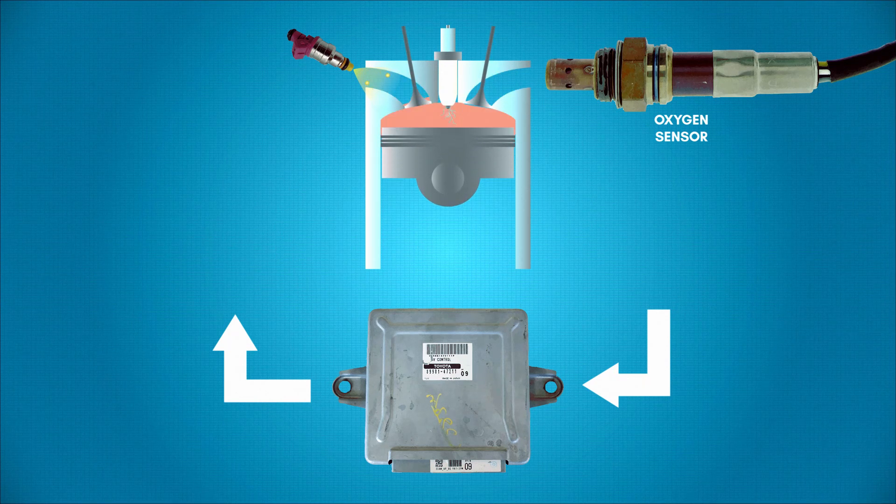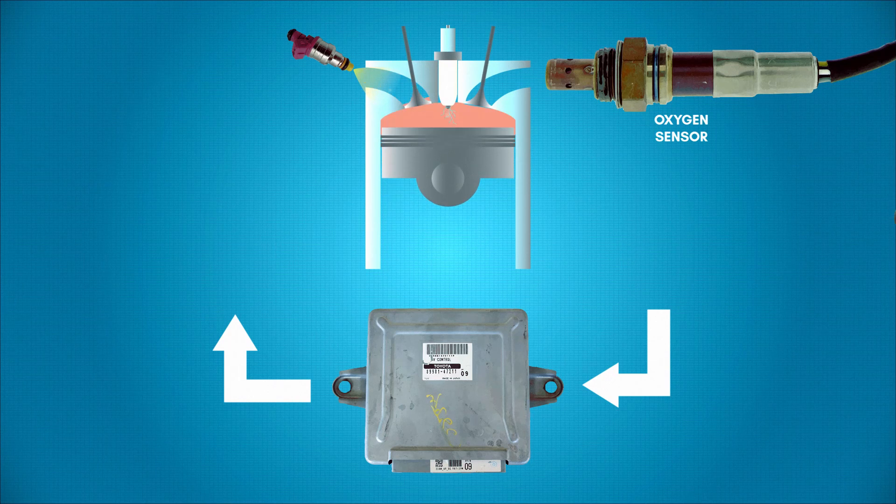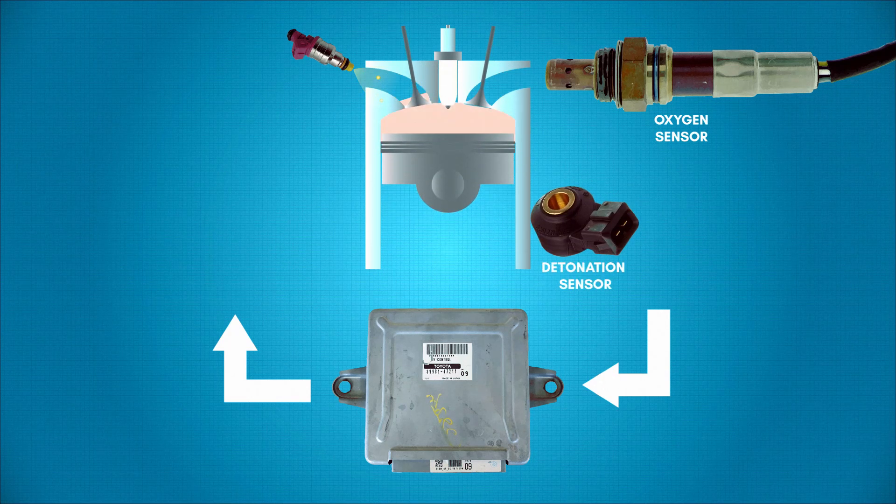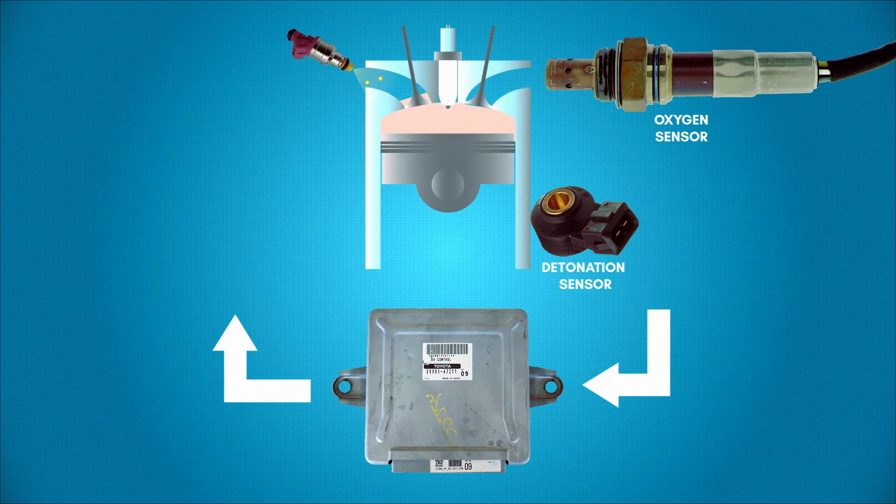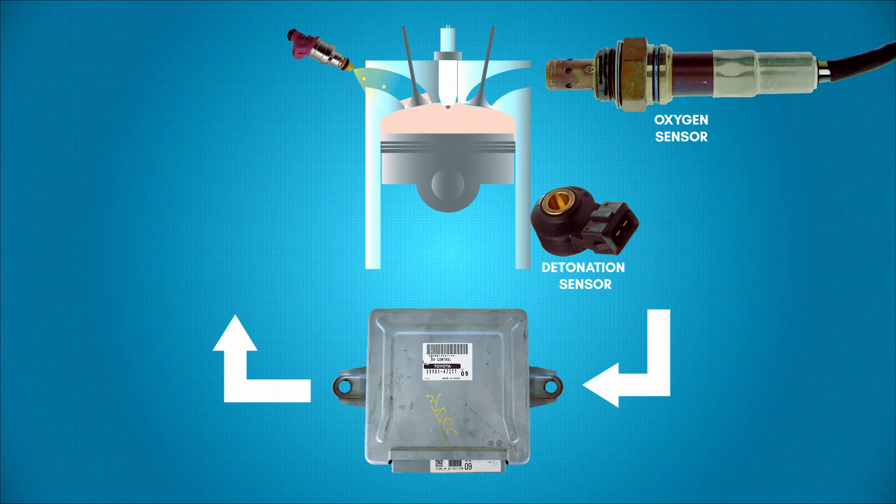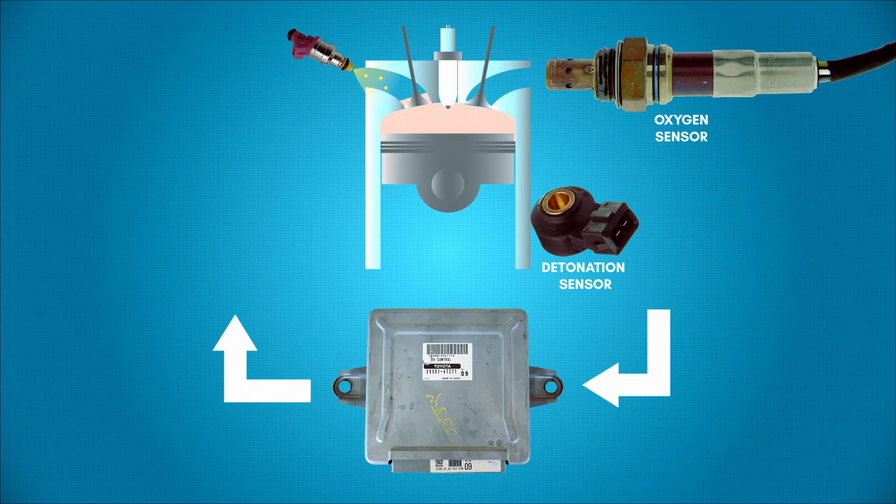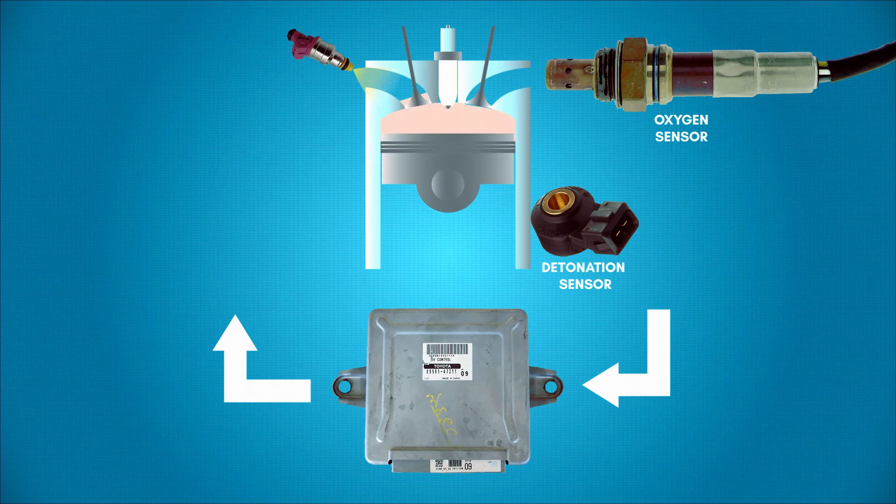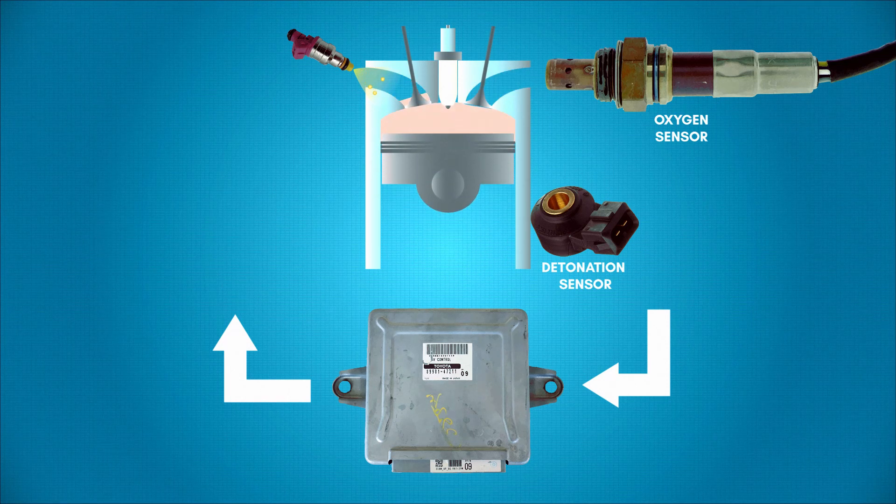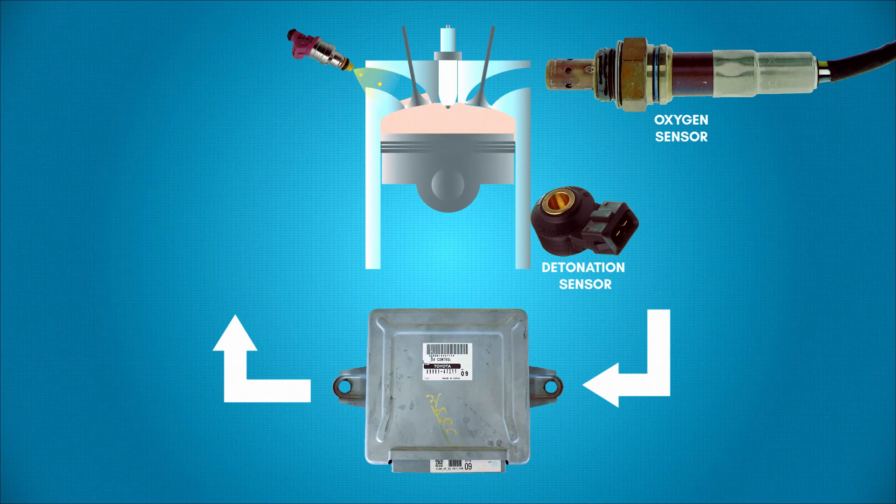On some fuel injection systems, sensors to detect detonation are also present. These early sensors worked by listening for the acoustical signature of detonation on the engine block. The ability to detect detonation allows manufacturers to tune engines even leaner for improved economy. If detonation is detected, the mixture can be enriched and the ignition timing adjusted to reduce the detonation.